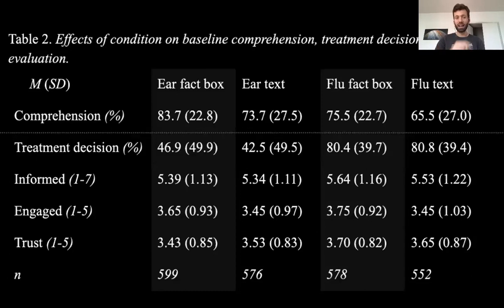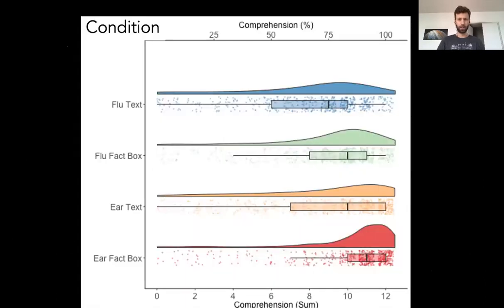Key results covered several outcomes: comprehension, treatment decision (get the treatment or not — no right answer here, especially with equivocal treatments), and ratings of whether they felt informed and engaged. I want to note there's no correct treatment decision for these equivocal cases, but it's useful to know whether a format led people to dramatically different decisions. Let me show the graph results.